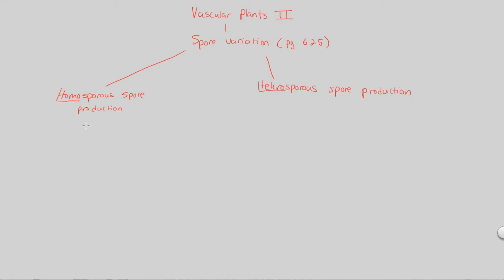But specifically in the homosporous spore production, we're going to see that this is actually seen in most seedless vascular plants. So those without seeds are going to be the vascular plants that possess this type of spore production. In addition, the basic premise and definition of this is the following. Homosporous spore production plants that do this are going to have one type of sporangium.